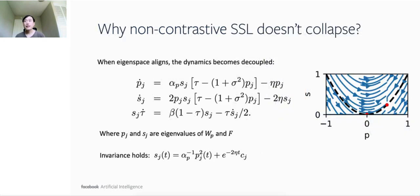When the eigenspace aligns, the dynamics can be decoupled into 2D into 1D scalar cases, which makes them much more friendly for analysis. The one-dimensional dynamics involves p_j and s_j, the eigenvalues of the predictor W_P and the correlation matrix F. From the dynamics, we also find a very convenient invariance that connects the dynamics of p_j and s_j together. This invariance is shown as the black parabola in the 2D phase diagram on the right.